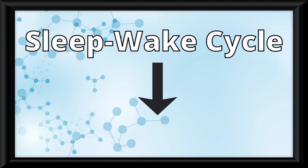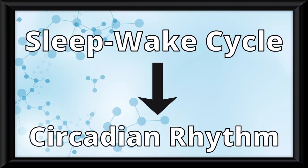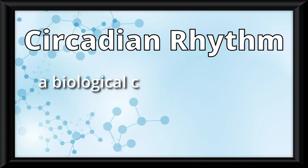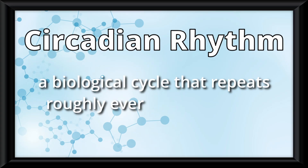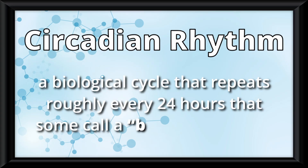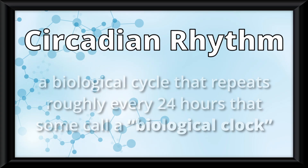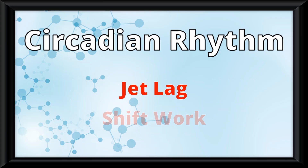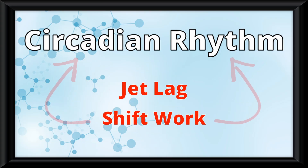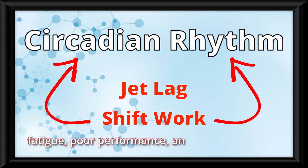The sleep-wake cycle is called a circadian rhythm, which is a biological cycle that repeats roughly every 24 hours — some call it a biological clock. Things like jet lag or shift work can throw off this rhythm, leading to fatigue, poor performance, and changes in mood.